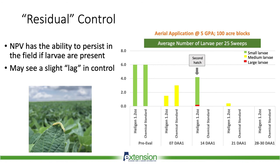Here's a slide demonstrating that residual — or air-quotes — residual control. You'll see a little bit of a lag in control if another flight of podworms comes in and eggs hatch. At seven days, Helogen looks similar to the chemical standard. Then at 14 days there's a spike in the population — that was a secondary hatch, all small larvae in the field. But at 21 and 28 days after application, the virus takes back over and we get control. It just takes a little bit of patience, a little bit of time, walking the field and getting comfortable with it before you really see these results.